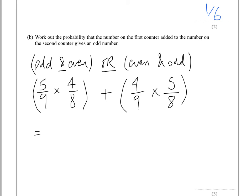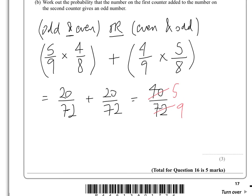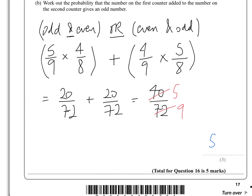That gives us 20 over 72. We need to add that to 20 over 72, which gives us 40 over 72. And that in fact cancels down. So, 8 goes into 40 five times, 8 goes into 72 nine times. Therefore, the probability is 5 over 9.